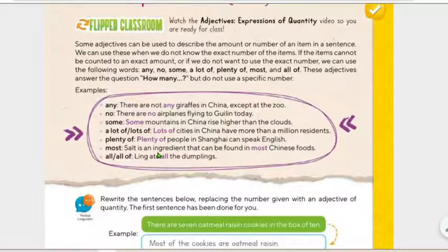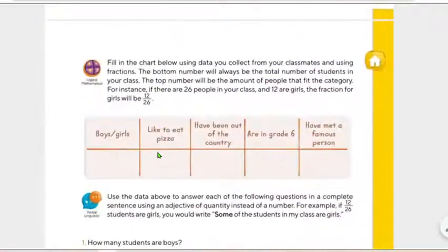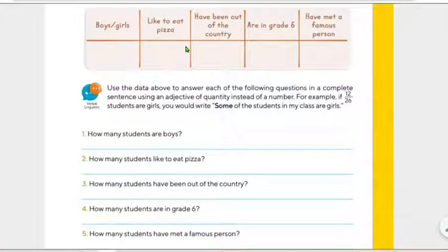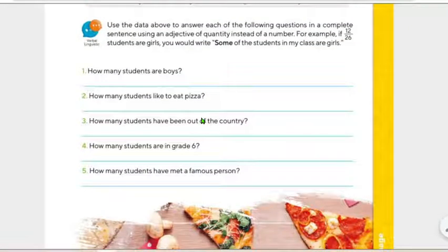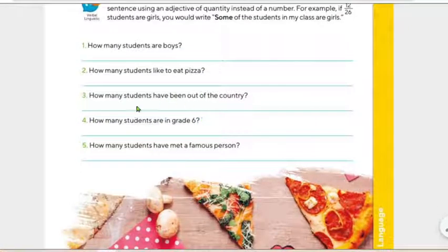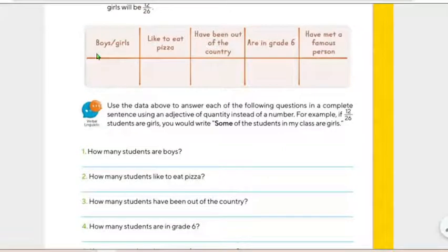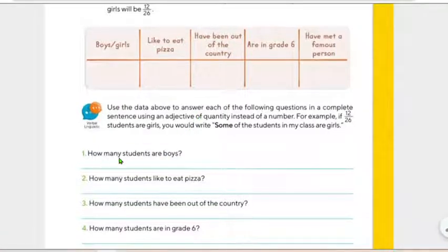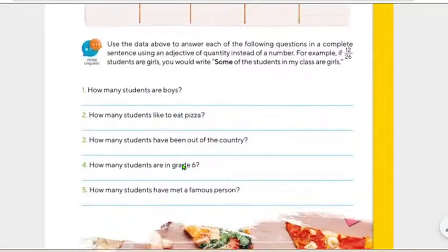Entonces, ahí está. Esas son lo que vas a hacer. Vas a preguntar, tienes que preguntar a tus compañeros en Classroom que te den esta información para que tú saques ahora sí que el número correcto. Y después contestar, ¿no? How many students like to eat pizza? How many students are boys? En la clase habíamos 13 chicos y 13 chicas. Entonces, ¿cuántos eran chicos? Entonces, most of some, right? Some of the students are boys, porque era, pues, la mayoría.